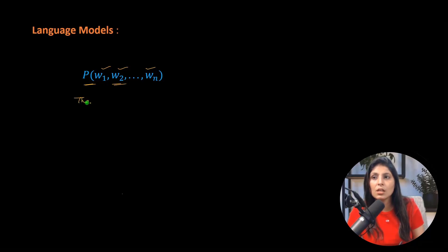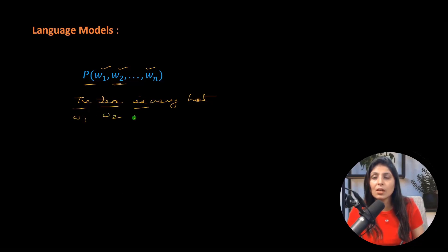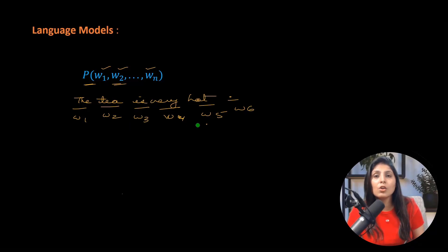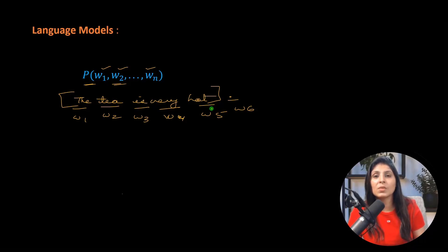Let's take a simple example: 'the tea is very hot.' Here 'the' is w1, 'tea' is w2, 'is' is w3, 'very' is w4, 'hot' is w5, and a full stop would be w6. These w1 through w6 are the tokens — words are tokens — and the probability represents how likely these words appear in this sequence in natural language.